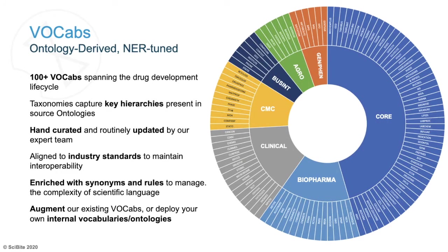Vocabularies are really core to what we do at SciByte. We have curated and created over a hundred specific vocabularies spanning drug development, agricultural, various entities such as indication, cell line, gene, all the way through to specific vocabularies that we've developed for use cases around pharmacovigilance, for biomarker extraction, and lots of other different use cases. These have been hand-curated and they are routinely updated by our expert team. We have a lot of industry expertise in developing and creating these ontologies and we also use our tooling to help automate that process.